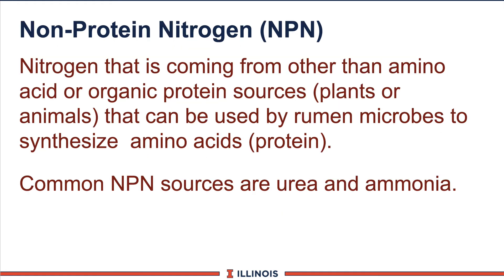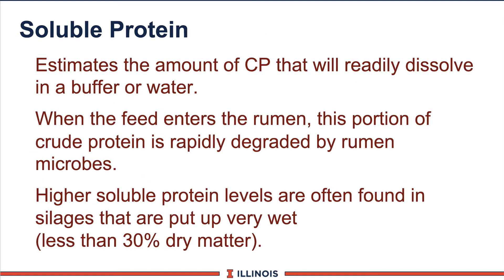NPN stands for non-protein nitrogen. You won't see this very commonly on many forage test results. This reflects any protein that is not in amino acid form and would probably be evaluated by NIR analysis. Soluble protein is that portion of the crude protein that goes into solution — usually using a buffered solution or some other media, or in some cases water. This rapidly breaks down and is utilized by the bacteria.